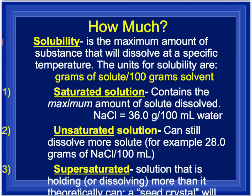On this slide we'll talk about words we use to describe solutions and how we can describe how soluble something is. The definition for solubility is the maximum amount of substance that will dissolve at a specific temperature. The units are grams of solute per 100 grams of solvent — usually water. So: how much solute can you put per 100 grams of solvent?